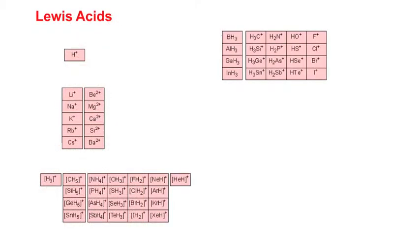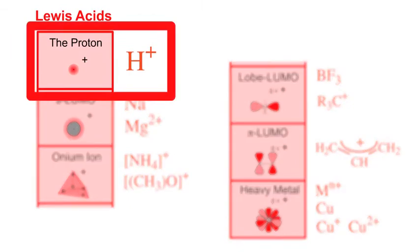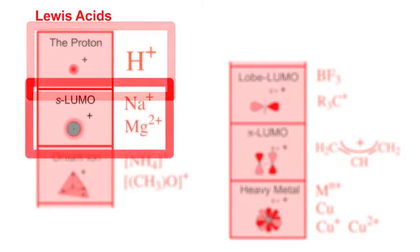We can classify these into six types. First we have the proton H+. The proton is a very special Lewis acid as it is the agent of Bronsted acidity. Indeed, anything that complexes with an H+ ion to produce a conjugate Bronsted acid is a Lewis base.